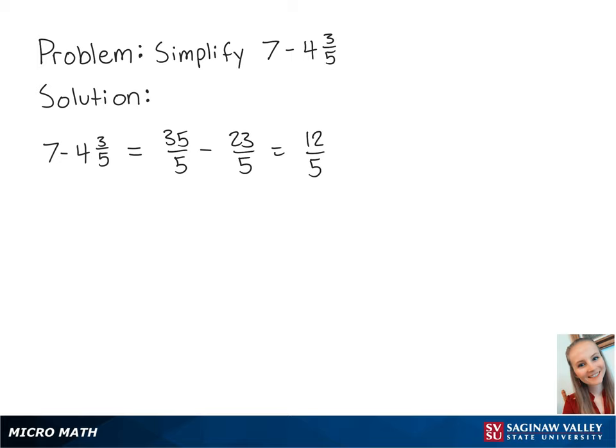Lastly, we need to convert the fraction back into a mixed number. And 12 fifths is equal to 2 and 2 fifths. This is the final answer.